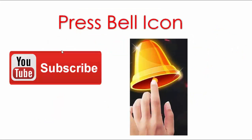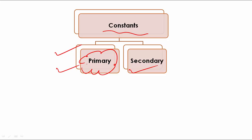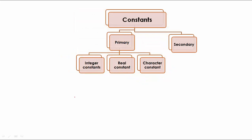In a C program we have two kinds of constants: primary and secondary. At this beginner level we are just going to understand primary level constants. Once you understand programming better, we'll go with secondary constants. So let's understand primary level constants.